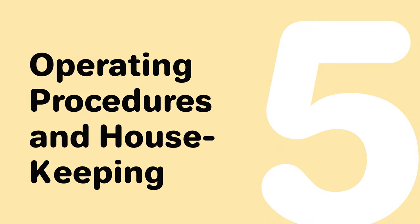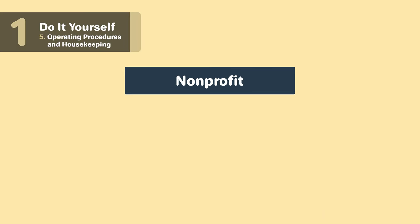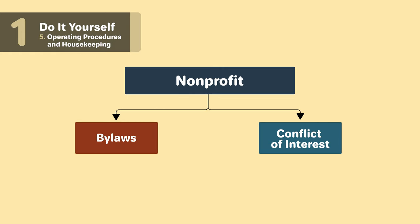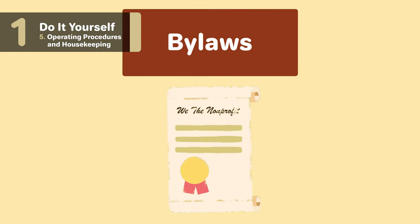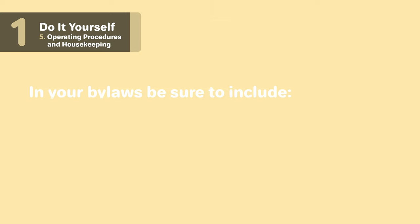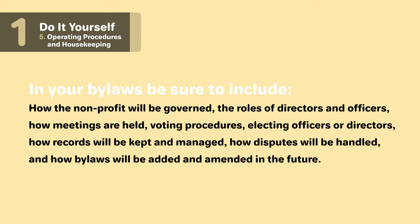Five: operating procedures and housekeeping. Once your nonprofit corporation has been formed, you'll want to start getting the structure together and determine how your nonprofit will be run, starting with the bylaws and conflict of interest policy. Your bylaws are the rules that determine how your organization will be governed and run — you can think of it as a constitution for your nonprofit. In your bylaws, be sure to include how the nonprofit will be governed, the roles of directors and officers, how meetings are held, voting procedures, electing officers or directors, how records will be kept and managed, how disputes will be handled, and how bylaws will be added and amended in the future.